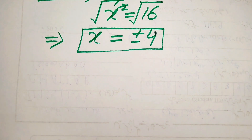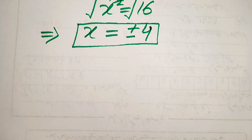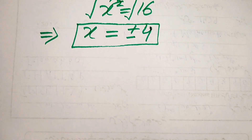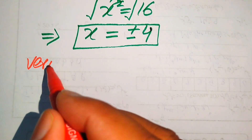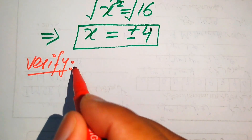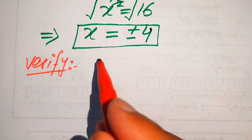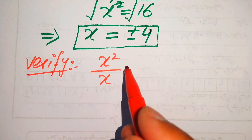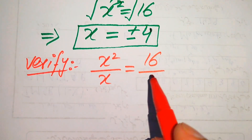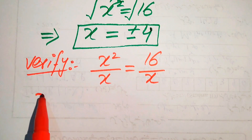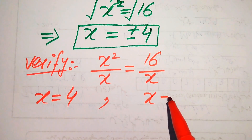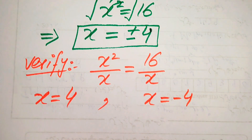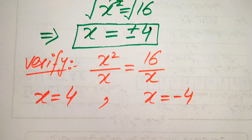We have three roots of the given equation, and now in the next step we need to check which of the roots are solutions and which are extraneous roots. For verification we copy down the given equation: x squared over x equals 16 over x. We write the positive root on one side and the negative root on the other side, and put both of these roots into the given equation.